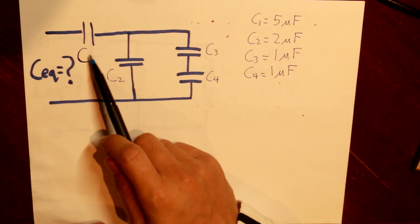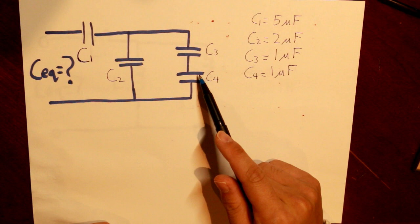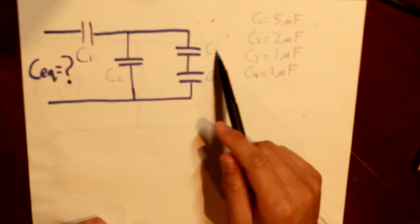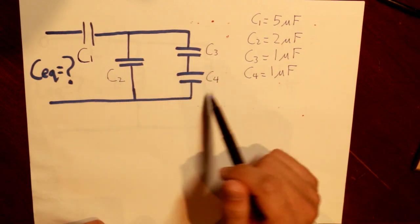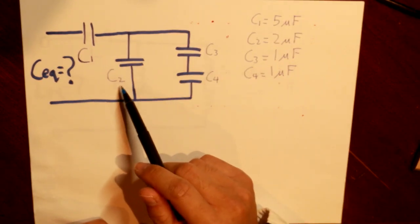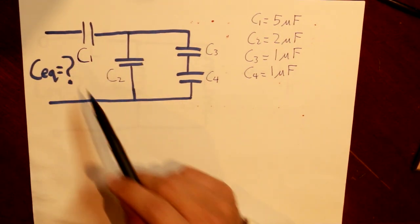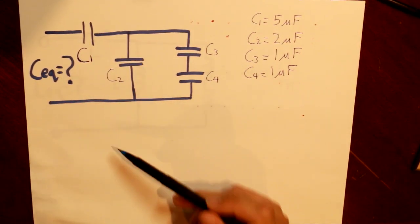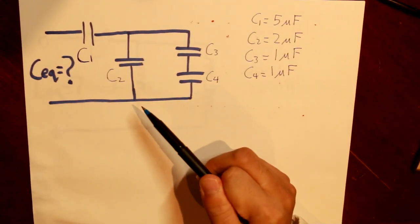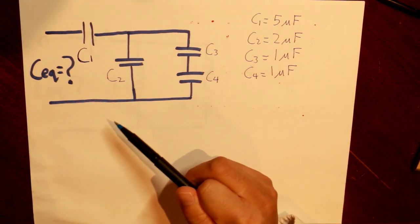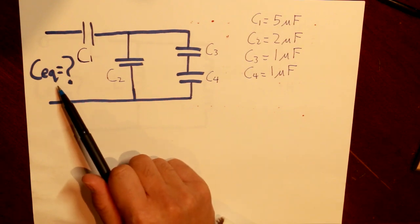We have C1 in series with a combination of three capacitors connected differently. C3 and C4 are in series with each other; those two are in parallel with C2; and that whole group of three capacitors is in series with C1. Let's decompose it step by step to find the equivalent capacitance.